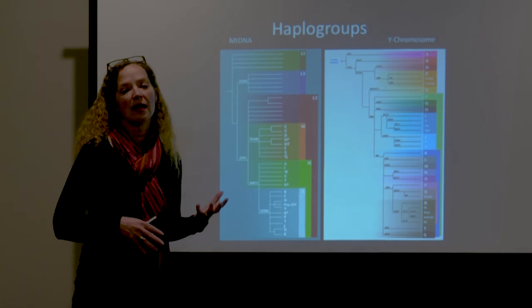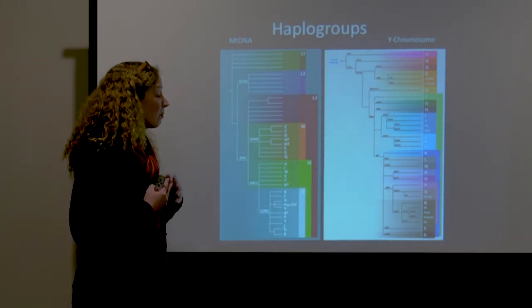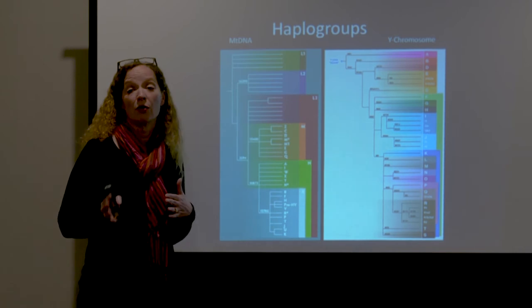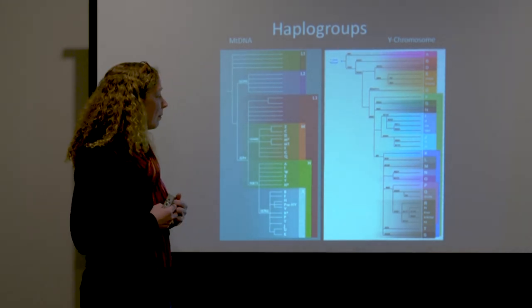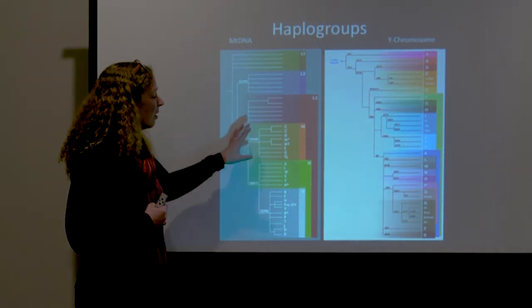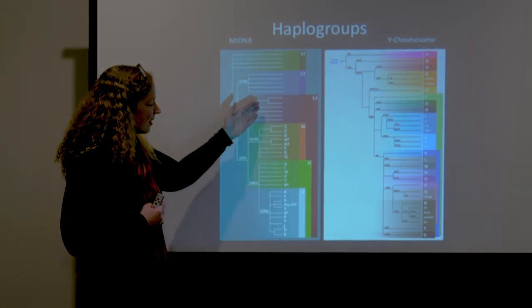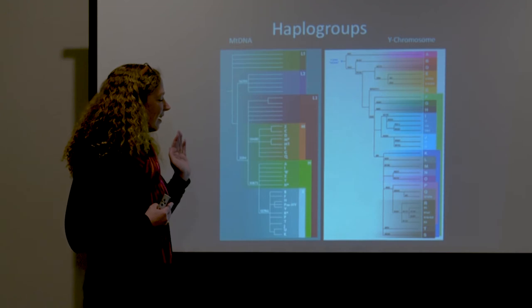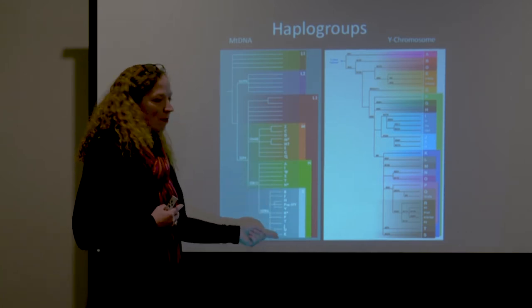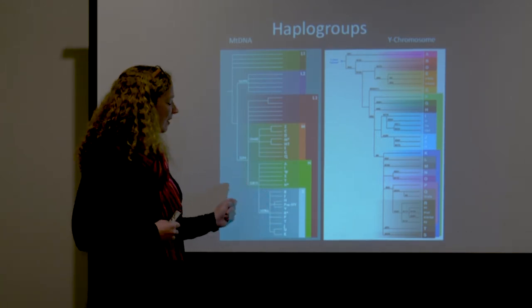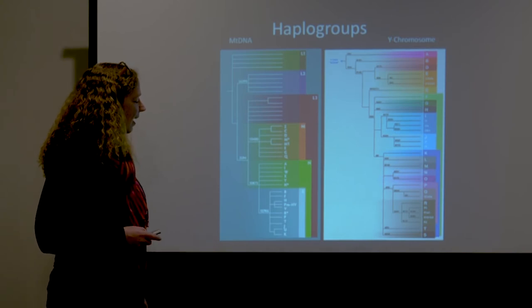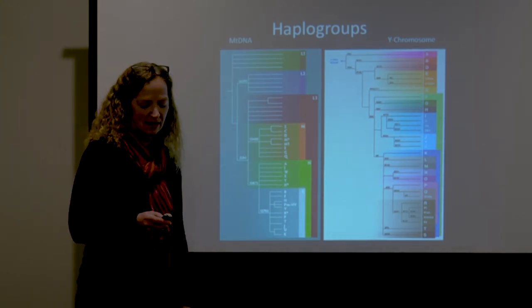The M lineages are seen primarily in southern Asian populations and into Australia and the Pacific. The N group goes north — almost all of the European lineages and many Asian lineages belong to the N group. The M group splits into various subgroups: C, D, M, E, G, and Q. The N group breaks up into a large group of R lineages, which further break into B lineages seen in the Pacific, F, H, R, P, T, J, U, K, and the N group lineages A, I, W, X, and Y.